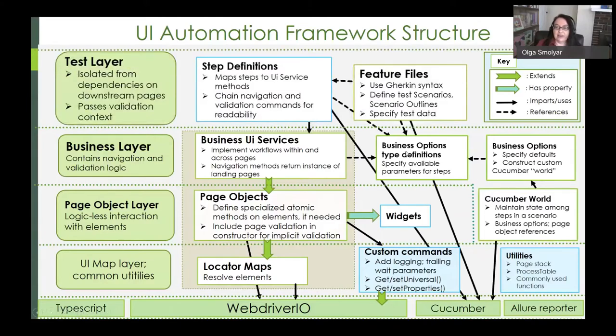Finally, the test layer, which is powered by cucumber, consists of feature files and step definitions. Feature files use the so-called Gherkin syntax to define test scenarios and scenario outlines and to specify test data. Feature files call steps defined in step definition files, which map steps to UI service methods. They can be used to chain navigation and validation commands for readability. The test layer is isolated from dependencies on downstream pages by the mechanism described here, where business UI services return instances of pages that they navigate to so that rather than having to import and depend on every page a test interacts with, it usually only has to import the login page and all the rest are organically generated during navigation of the workflow.